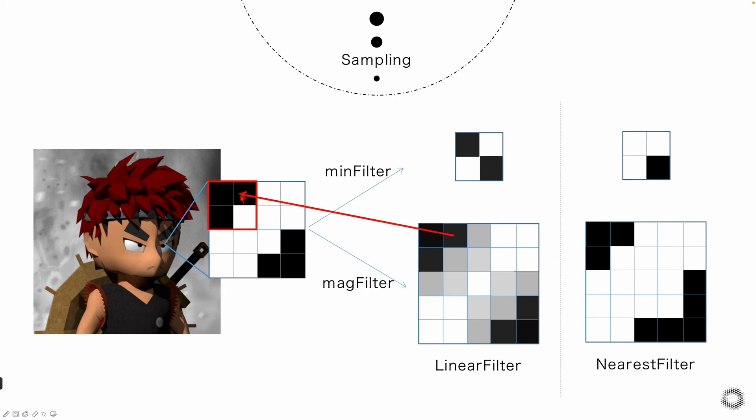In the same way, the second point is still mixed with these four colors. But this time, it's closer to this white pixel. So the proportion of the white will be increased a little bit. And in the end, we'll get a light gray. And if we apply this method to every pixel, then we can get this final result.